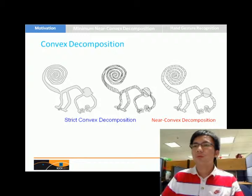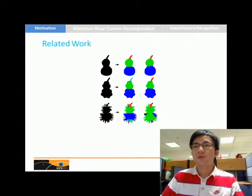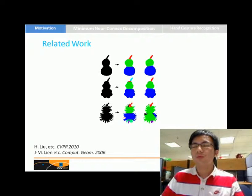So researchers proposed near-convex decomposition which decomposes the shape into near-convex parts. There are many near-convex decomposition methods, but there is a common problem: redundancy of parts. They are not robust to shape deformation and local noises.